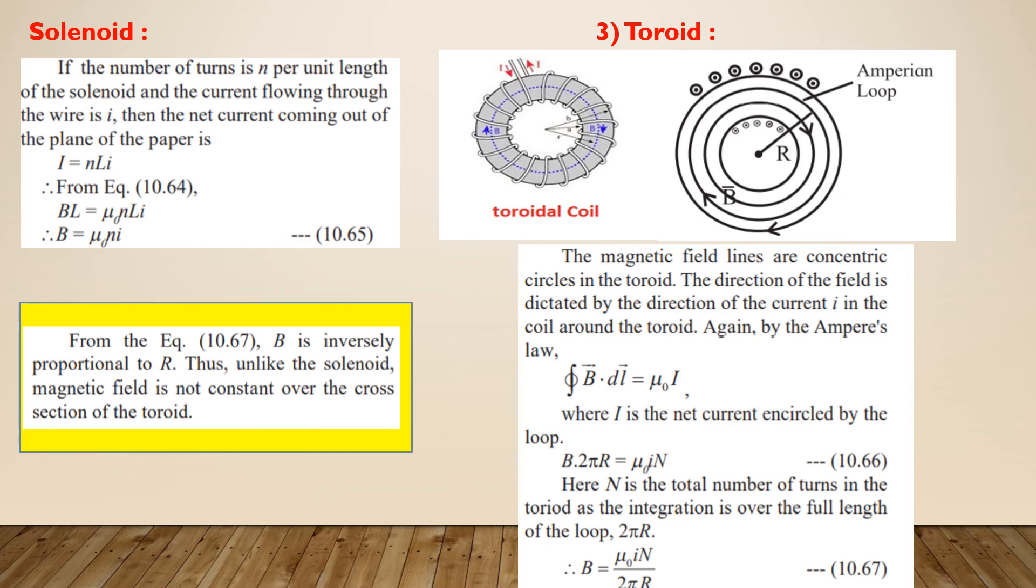Application of Ampere's law gives us closed integral B dot DL is equal to mu0 times I, where I is the net current encircled by the loop. Now, if N is the total number of turns in the toroid coil and I is the current flowing through the wire, then the net current I is equal to small i into N.